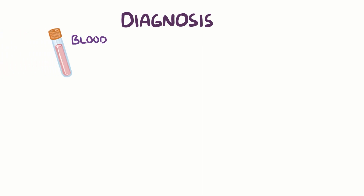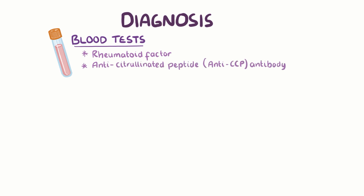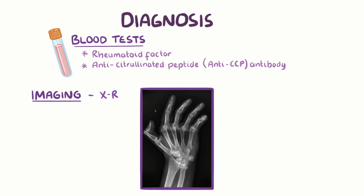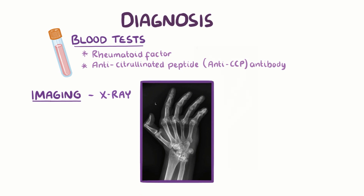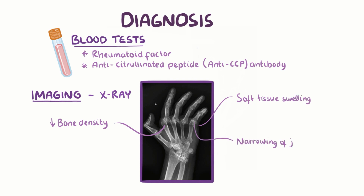Diagnosis of rheumatoid arthritis usually involves confirmatory blood tests, like looking for the presence of rheumatoid factor and anti-citrullinated peptide antibody. Additionally, imaging studies such as X-ray usually reveal decreased bone density around the affected joints, soft tissue swelling, narrowing of the joint space, and bony erosions.